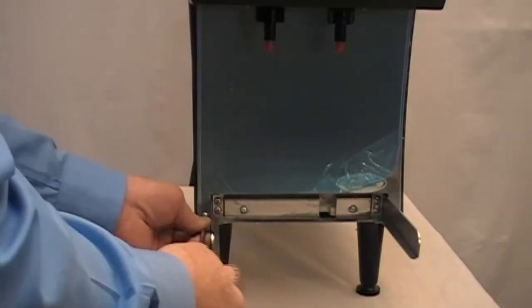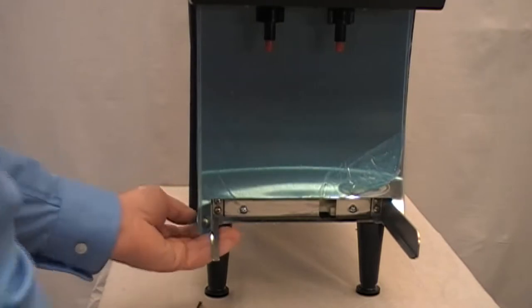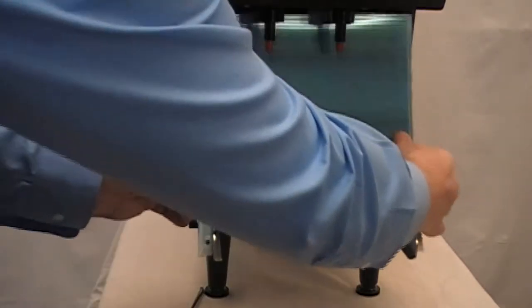Next, remove the two retaining screws holding the front splash panel and the panel itself and remove the protective film from the splash panel.